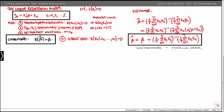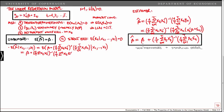To show that the estimator is unbiased, we first consider the conditional expectation of beta hat given x1 all the way to x capital T. We simply plug in the term for the estimator, which gives us beta plus the sampling error conditional on all the x's. Conditioning on x, we can treat it as fixed, giving us beta plus a term that is equal to 0 as a consequence of our strict exogeneity assumption. So the expected value of beta hat given all the x's is just equal to beta, which shows that the estimator is conditionally unbiased.